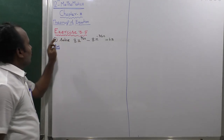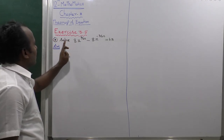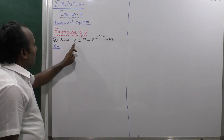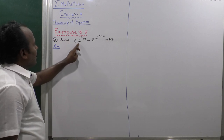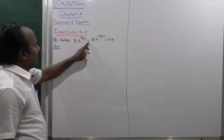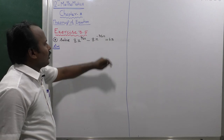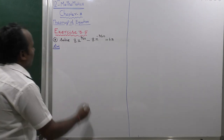x is 3.5, third sum. Solve x: solve 8 into x power 3 by 2n minus 8 into x power minus 3 by 2n is equal to 63.